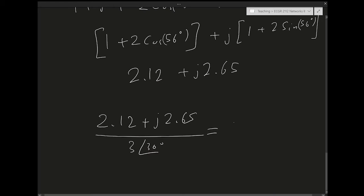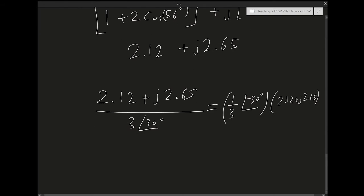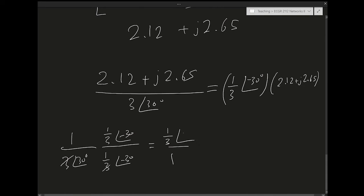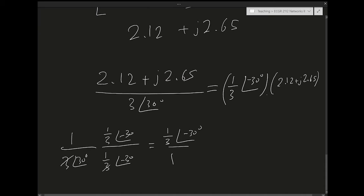Dividing by 3∠30° is equivalent to multiplying by (1/3)∠−30°. If I take 1/(3∠30°) and multiply it by (1/3)∠−30°, I get 1∠0° = 1 — nothing changed. So I just took what was in the denominator and put it in the numerator. Now to facilitate this multiplication, I want to convert 2.12 + j2.65 into polar form.